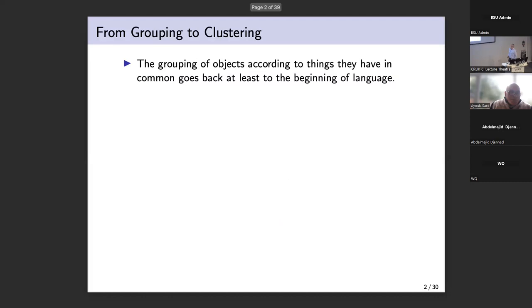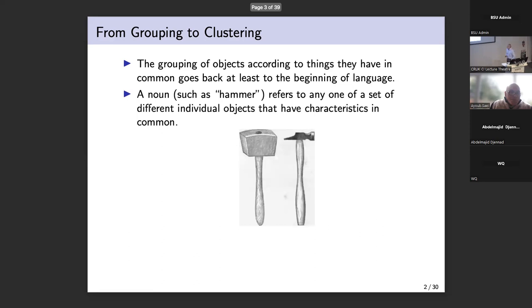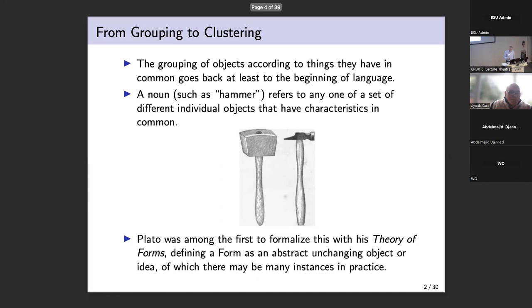The idea of grouping objects according to being similar to each other, which is what clustering is, goes back all the way to the origins of language where we tend to use the same word to describe multiple objects that have something in common with each other. For example, the word hammer is used to describe multiple objects that have similar attributes in common. This was actually formalized as long ago as by Plato in his theory of forms, where he defined the form as an abstract unchanging object of which there were many instances in practice. So clustering actually goes back a long way and was even formalized as long ago as the ancient Greeks.